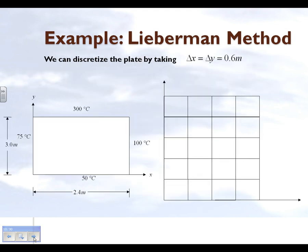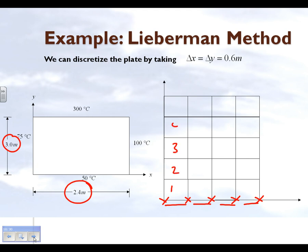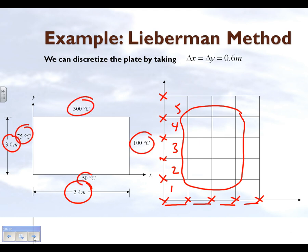We have a rectangular plate. We are breaking it up into five nodes along the x-axis, giving us four grids along x, and six nodes along the y-axis, giving us five grids along y. So we basically have 30 nodes in this problem, but we only need to find the temperature at the twelve internal nodes, because the temperature at the external nodes is given by the four boundary conditions on the four edges.